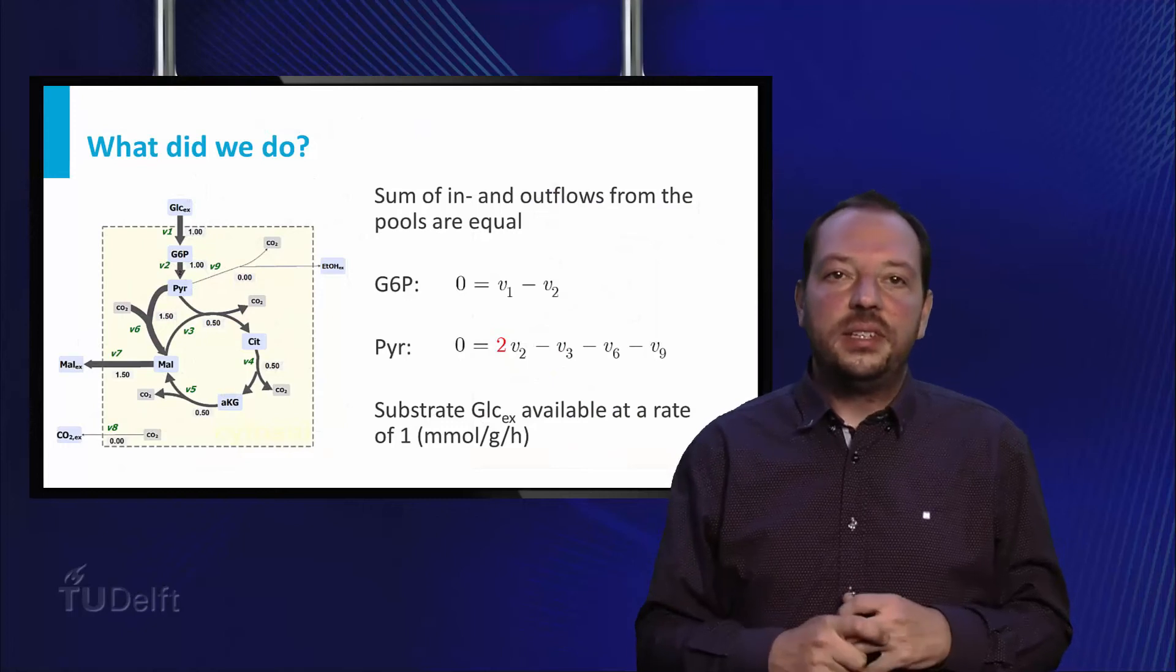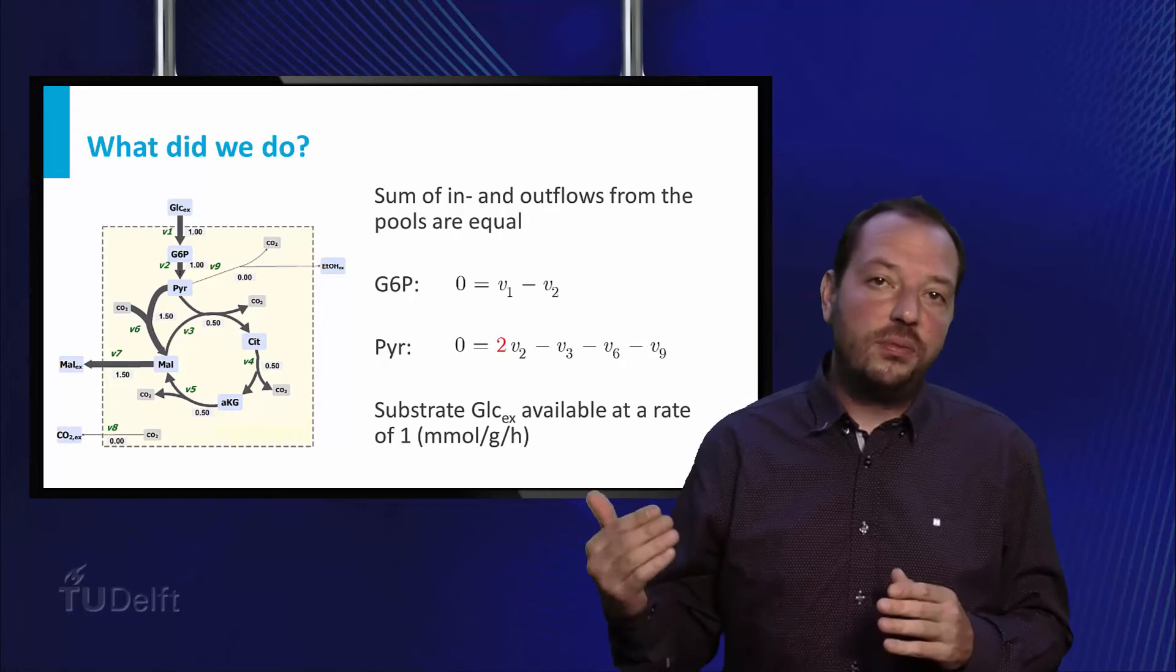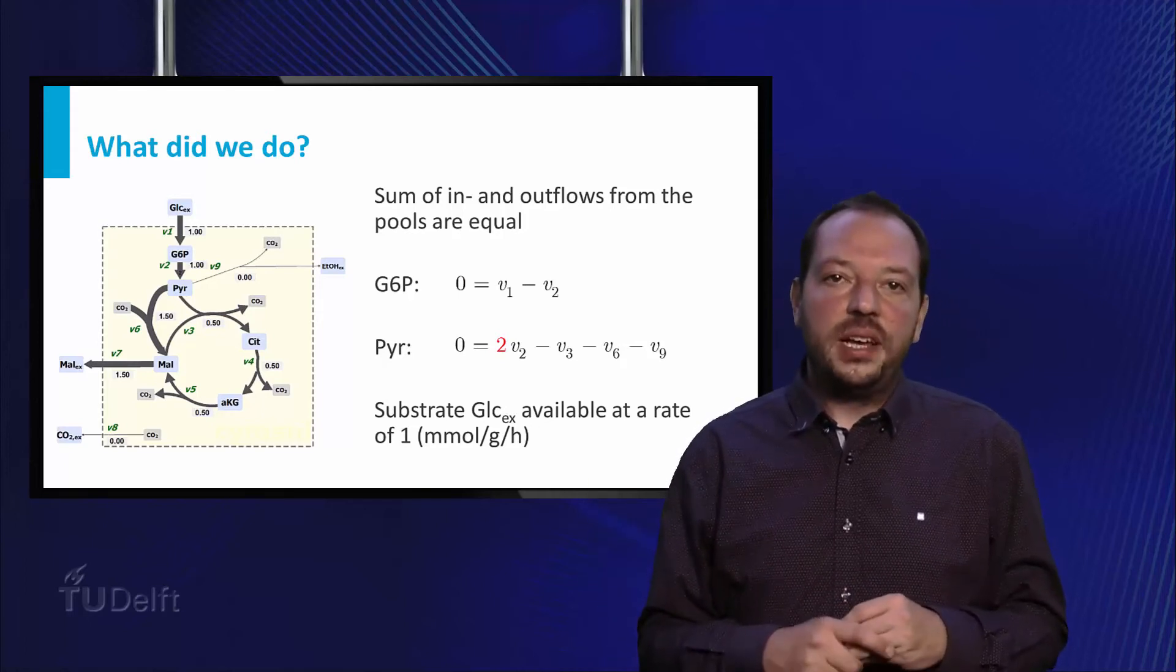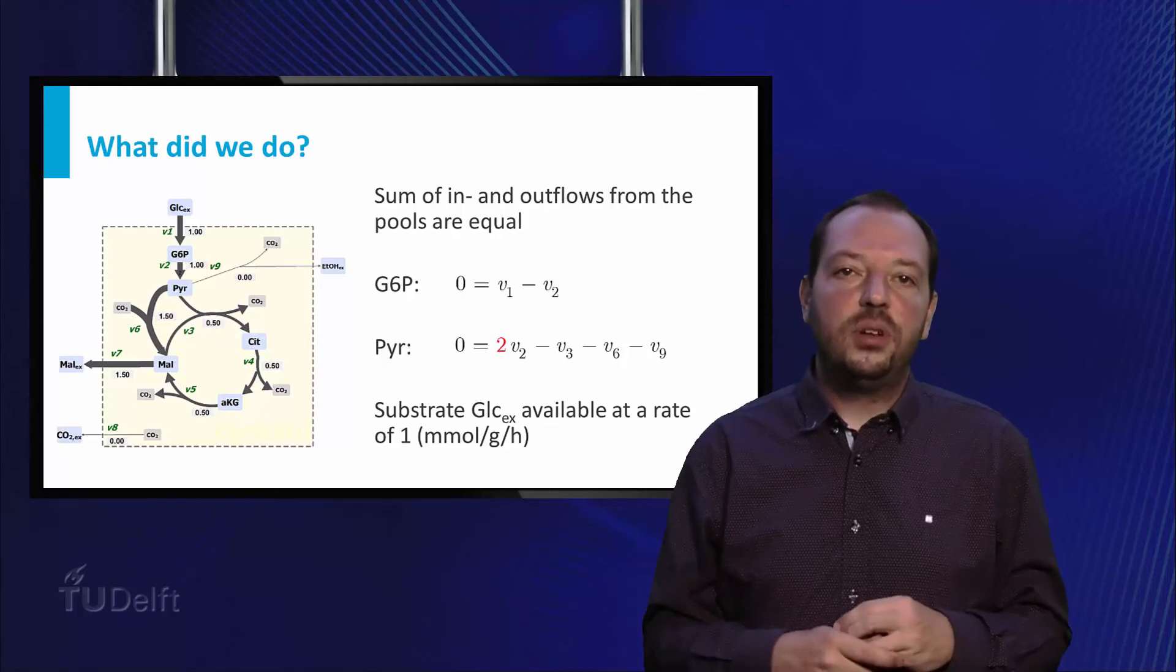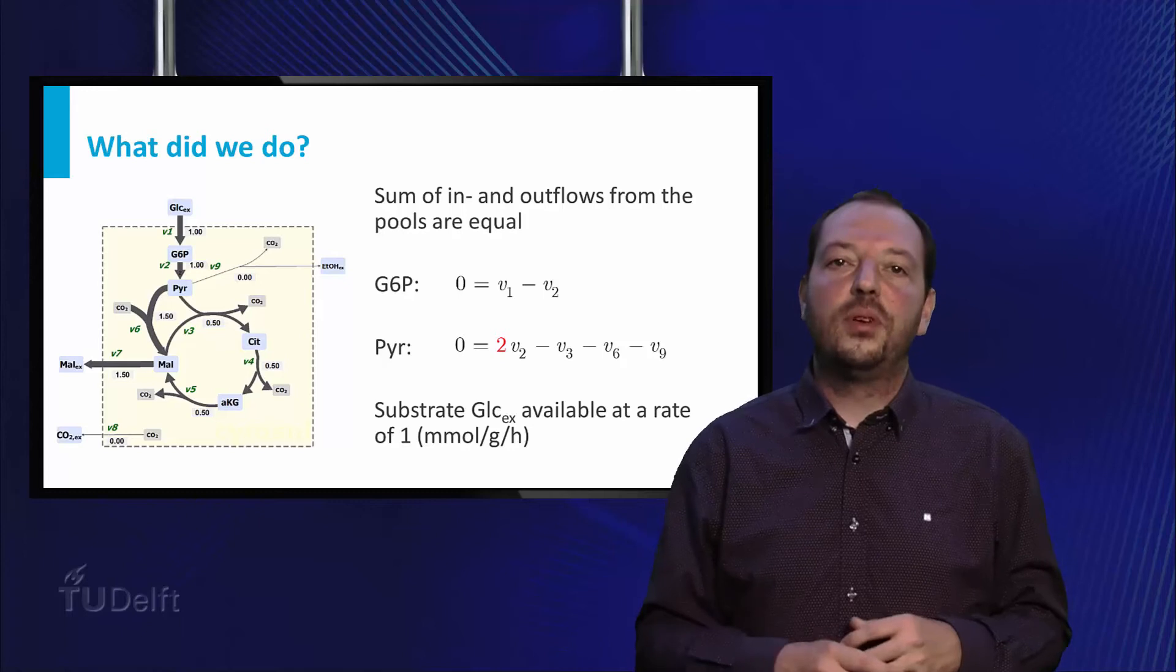Reflecting on these simplified maps, how would we do this for a genome scale model, including cofactors and energy metabolites? Therefore, it is good to analyze what steps we took in the small network and implement this in an algorithm that can be performed by a computer.